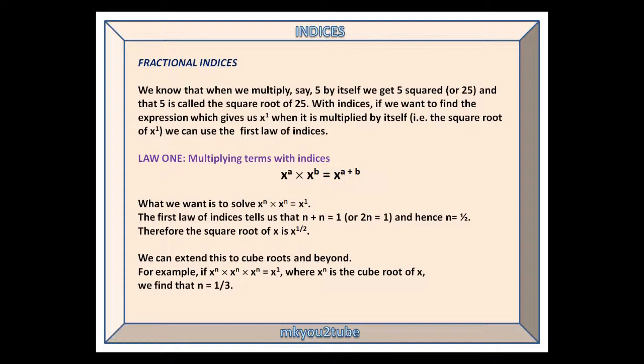Fractional indices. We know that when we multiply, say, 5 by itself, we get 5 squared, or 25, and that 5 is called the square root of 25. With indices, if we want to find the expression which gives us x^1 when it is multiplied by itself, i.e., the square root of x^1, we can use the first law of indices.